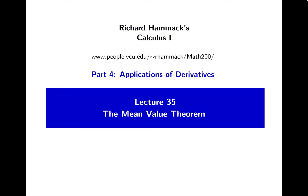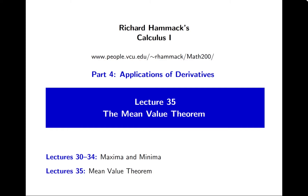Hello, it's Richard Hammock's Calculus 1. We are in Part 4 of the course on Applications of Derivatives. This is Lecture 35, The Mean Value Theorem. Most recently, in Lectures 30 through 34, we studied the theory of maxima and minima — the theory of extrema. Today in Lecture 35, we'll talk about the Mean Value Theorem, which is a result that flows from the theory of extrema. This has several important consequences, particularly for Part 5 of the course on integration. Today we'll introduce the Mean Value Theorem and talk about a couple of those consequences.